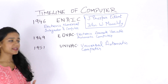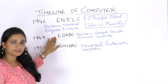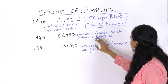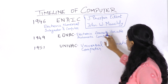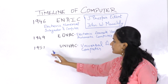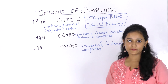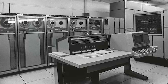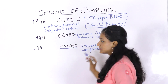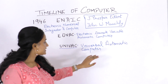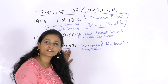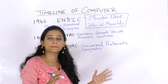In 1949, they developed EDVAC, which stands for Electronic Discrete Variable Automatic Computer. Then in 1951, they developed UNIVAC — Universal Automatic Computer — which was the first general purpose computer for commercial use. Unlike its predecessor ENIAC, UNIVAC was binary rather than decimal.